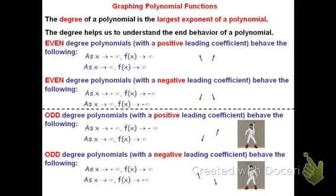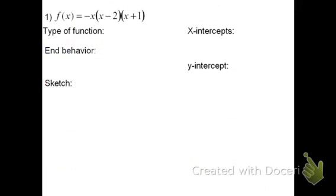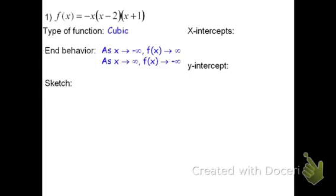Now let's look at some examples of how to use this. In our first problem, we have f equals negative x times the quantity x minus 2 times the quantity x plus 1. If we were to multiply this out, the negative x times x times x would be negative x cubed, which tells me this is a cubic function. Because it's a negative x to the third, I know that the end behavior will be: as x goes to negative infinity, f will rise towards infinity, meaning the left will go up. And as x goes to positive infinity, f goes down towards negative infinity, meaning the right will go down.